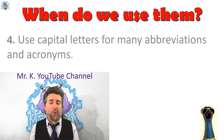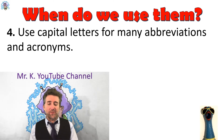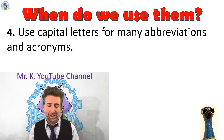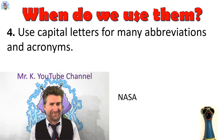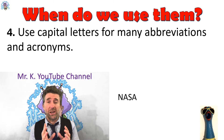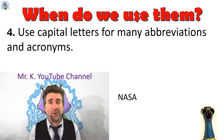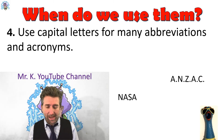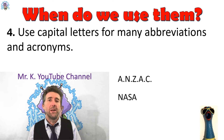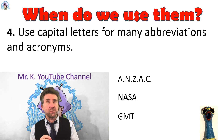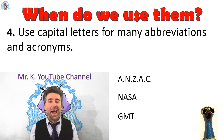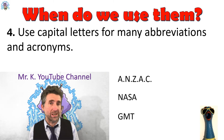The fourth time we would use a capital letter is for abbreviations and acronyms. For example, NASA — National Aeronautics Space Agency — is a shortened abbreviation of a longer title, and all the letters in there would be capitals. Another one: ANZAC — Australian New Zealand Army Corps — that is an abbreviation as well, and they're all capitals. And GMT, which is Greenwich Mean Time, is another abbreviation, so all capitals.